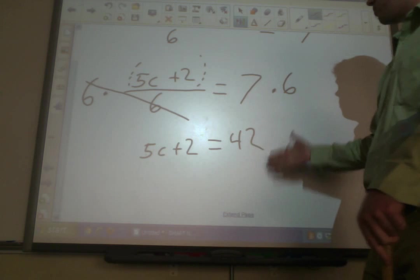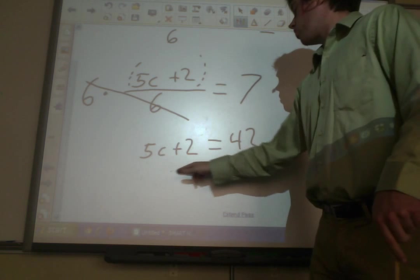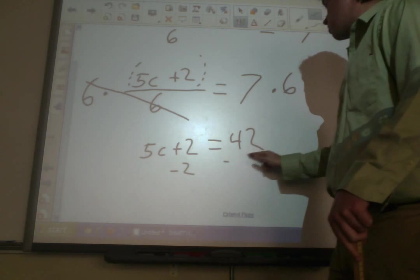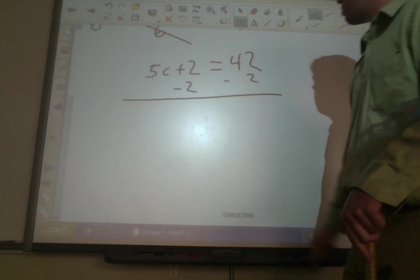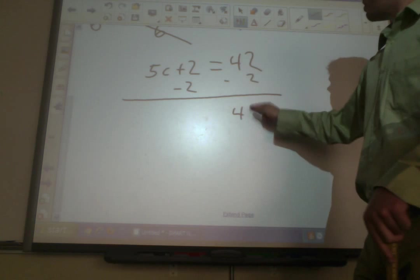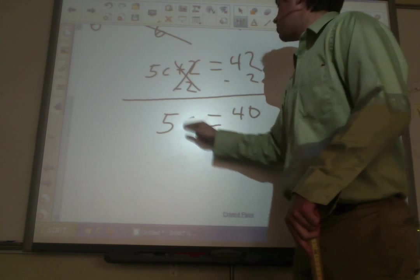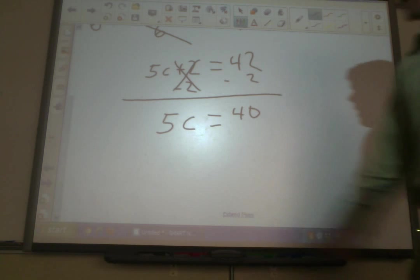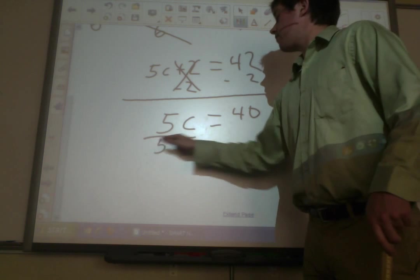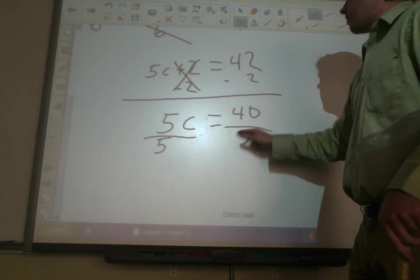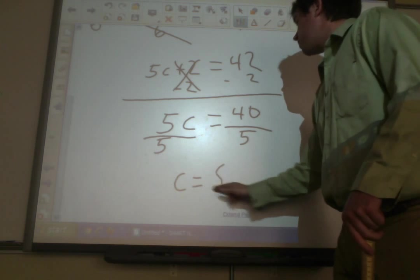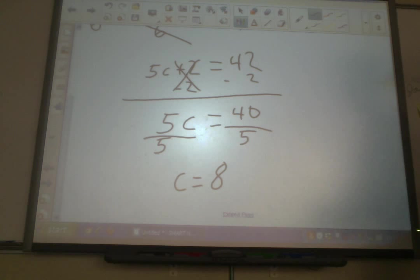I'm going to get rid of the 2 first. That's going to be 40 equals 5c. Finally, divide by 5. Divide by 5. C equals 8. And there's our answer. C equals 8. So, now that one's starting to get a little bit more complex.